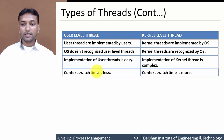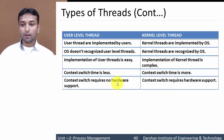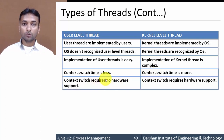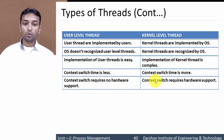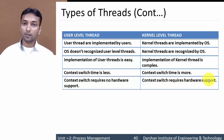Context switch time is less in the case of user level threads compared to kernel level threads. Context switching requires no hardware support for user level threads, whereas kernel level threads require hardware support because hardware always lies in kernel space.